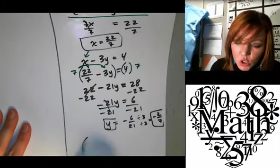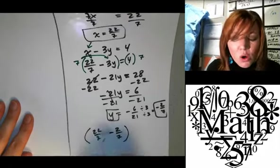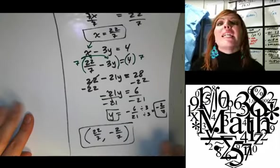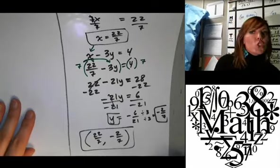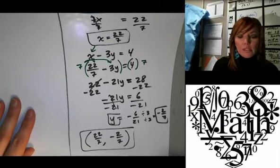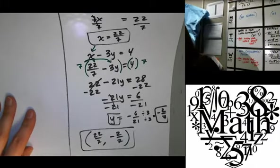Okay. So we get 22 7ths comma negative 2 7ths. Again, you don't, I would say that 9 times out of 10, you should not end up with really gnarly fractions like this. If you do, check your math. But you see that they do. It does happen from time to time. All right. Questions?